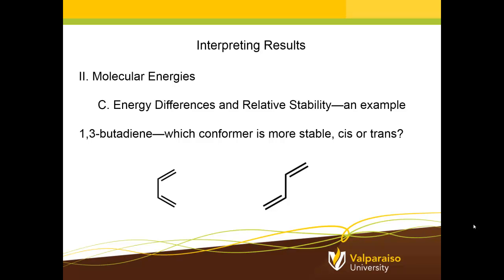Welcome back to Introduction to Computational Chemistry at Valparaiso University. In a previous session I talked about the meaning and the units used for molecular energies calculated by Gaussian 09, and we also mentioned how one could use energy differences between two species that were conformers or isomers in order to decide which one is more stable. I'd like to provide an example calculation to illustrate that in this session — we'd like to look at 1,3-butadiene and ask which conformer is more stable, the cis or the trans.